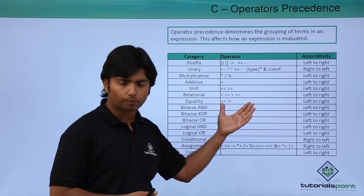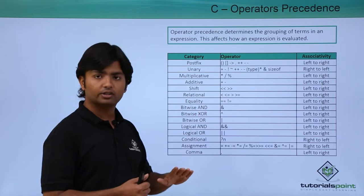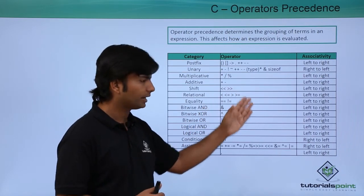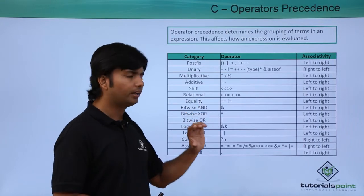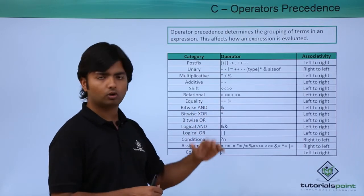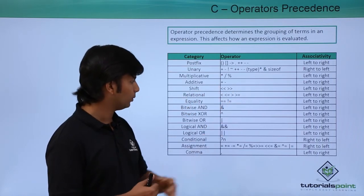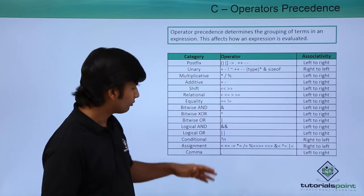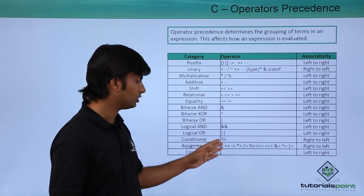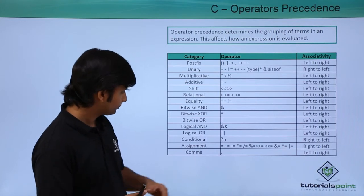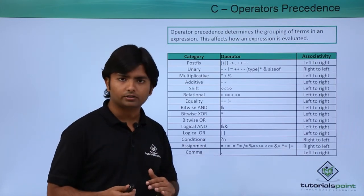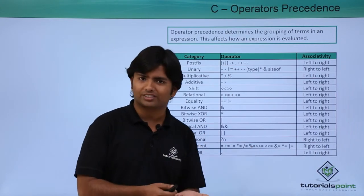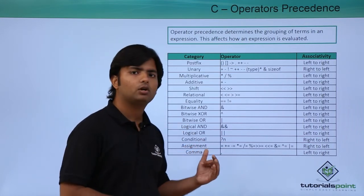After arithmetic, we have the shift operators, then relational operators — not counting equal and not-equal, but less than, less than or equal to, greater than, and greater than or equal to. Then equality comparison using double equals or not-equal (!=). After that, bitwise AND, bitwise XOR, bitwise OR, then logical AND and logical OR, and the conditional (ternary) operator. Finally, shorthand assignment operators like +=, -= and the comma operator, which has the lowest precedence.